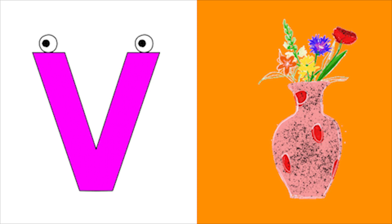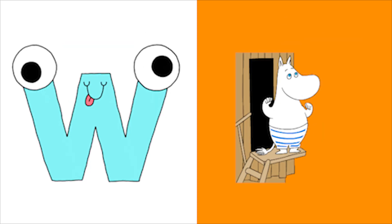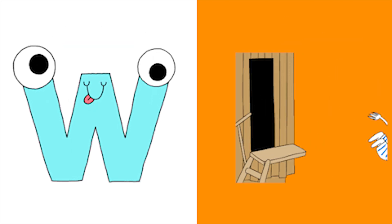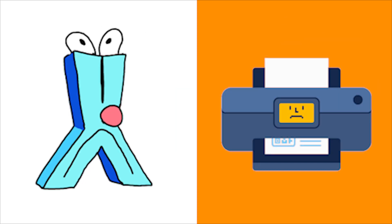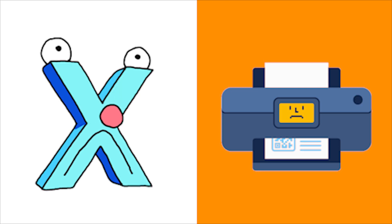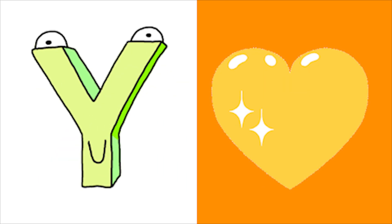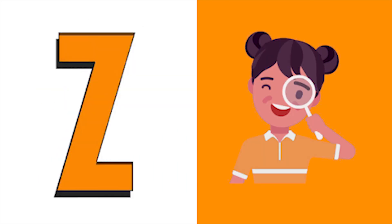U for unicorn, V for vase, W for whale, X for zero, Y for yellow, Z for zoo.